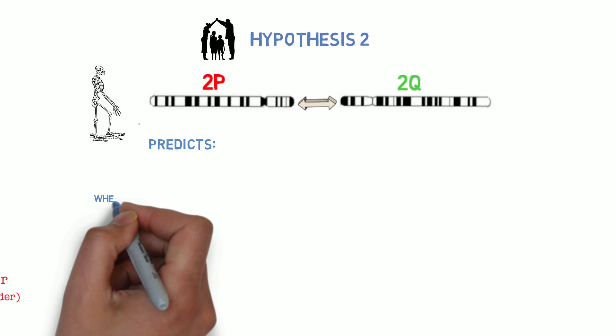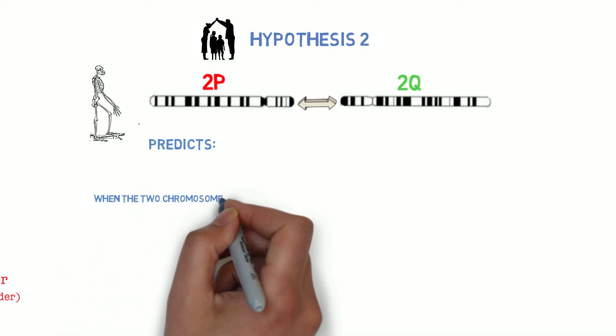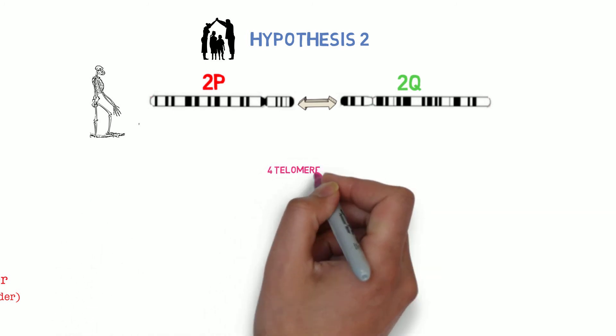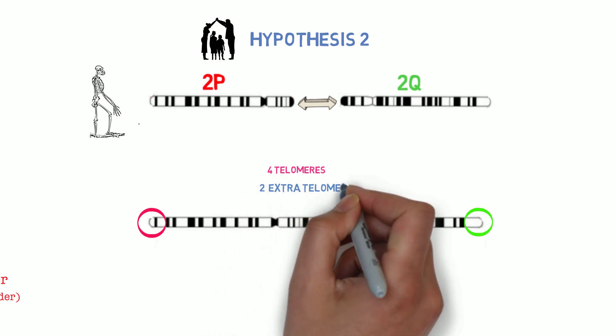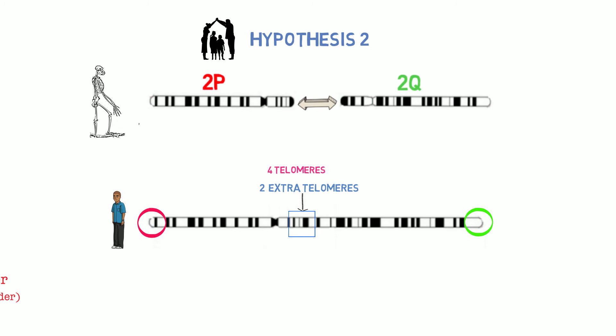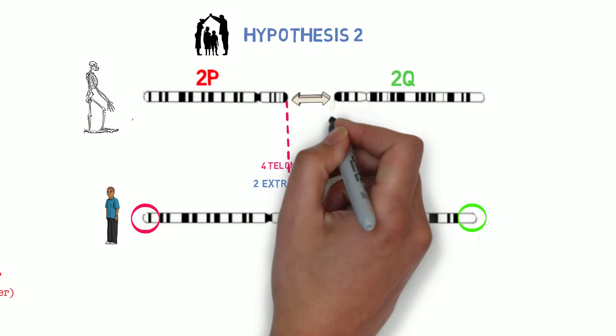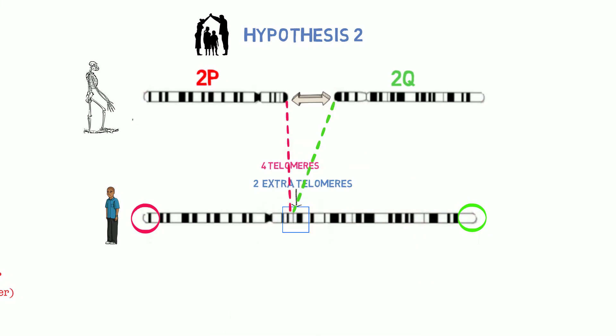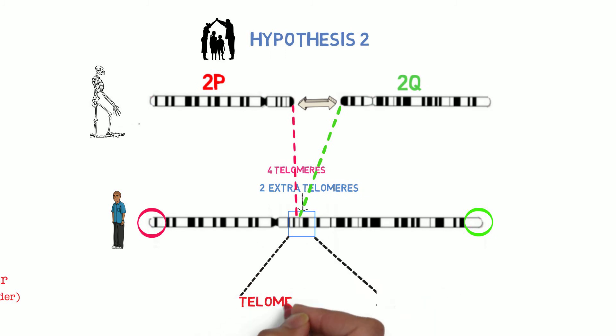Hypothesis number two predicts that when the two chromosomes became one, a chromosome with four telomeres would have been present. Furthermore, it predicts still today, chromosome number two would still have two extra sets of telomeres at the exact point where the banding patterns between chimpanzee chromosome 2Q and chimpanzee chromosome 2P merge. Furthermore, it predicts the two telomeres would be oriented in exactly opposite ways at the junction point because, after all, they come from two different ends of chromosomes. That's exactly what is found. Two telomeres in the middle of our chromosome, and they are in opposite orientation.